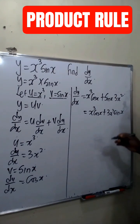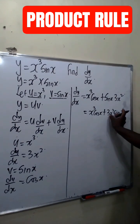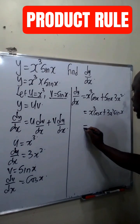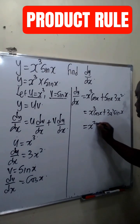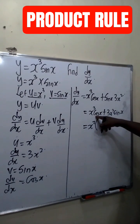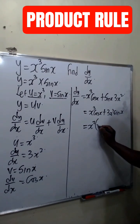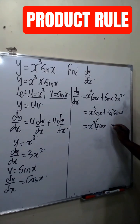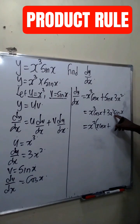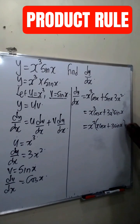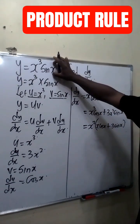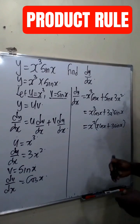Now looking at this, x raised to the power 2 is common — let's factor it out. If you factor x raised to the power 2 out, this will be x squared times x cos x plus 3 sin x. The derivative of this function is this result.